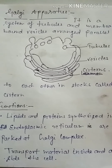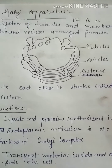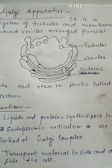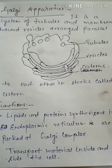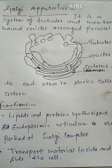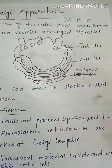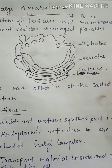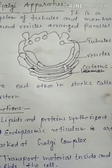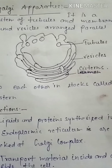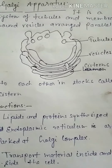Golgi apparatus is a system of tubules and membrane-bound vessels arranged parallel to each other in stacks called cisternae. As we can also see in these figures, there are vessels arranged nearly parallel to each other.